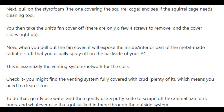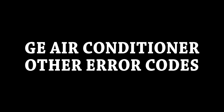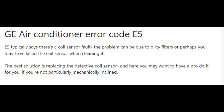There are a few other error codes you may see when using your GE air conditioner. Error code A5 points to a coil sensor issue. When you see error code A5, it means there is a coil sensor problem — the filter may be dirty or the coil sensor may actually be damaged or dead, possibly from cleaning. The solution is to replace the coil sensor. If you cannot do that yourself, consider calling a professional to do it for you.